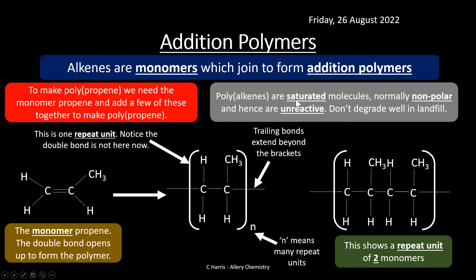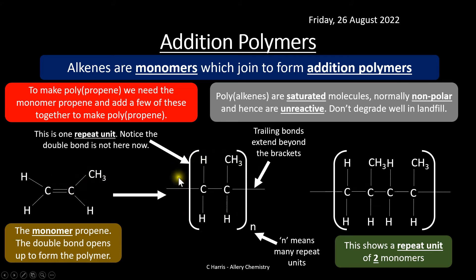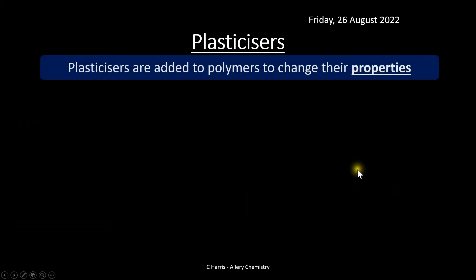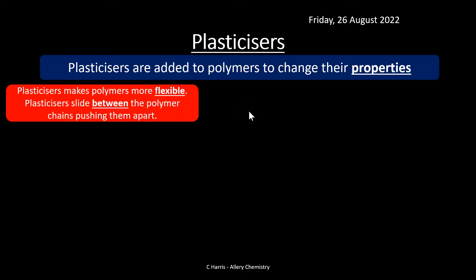Polyalkenes are saturated molecules — they don't have any double bonds. They're normally non-polar and not very reactive, and for this reason addition polymers don't degrade very well in landfill. Any alkene can open up its double bond to form an addition polymer. Because they don't degrade well, they're quite robust, but they cause environmental problems. We can also add plasticizers to polymers to change their properties altogether.